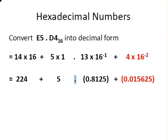What we're going to do now is add 224 and 5 to get 229—that's the integer part of the number we're looking for. Let's get the fractional part. I have to add those two fractional numbers, 0.8125 and 0.015625, which gives 0.828125.